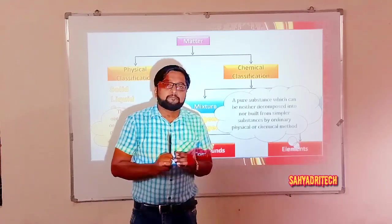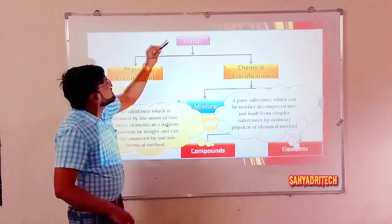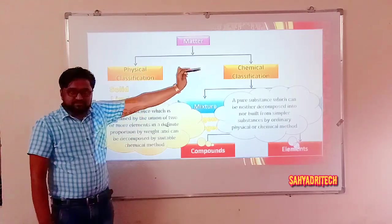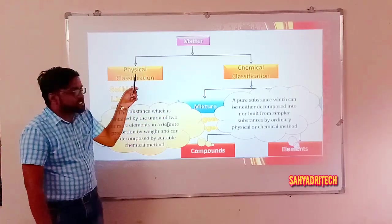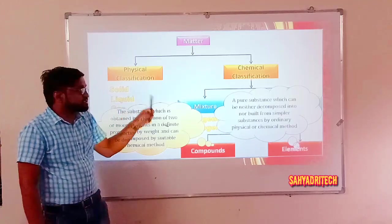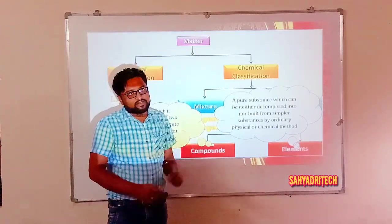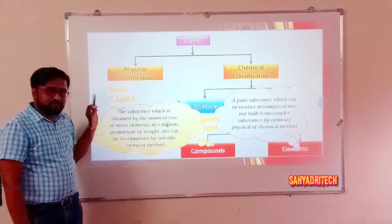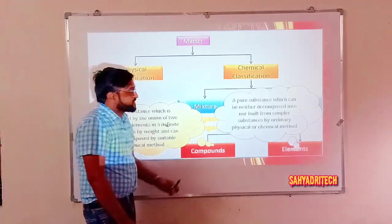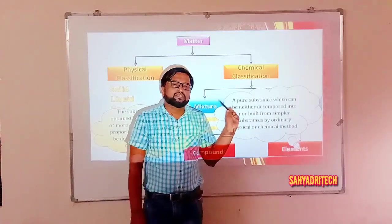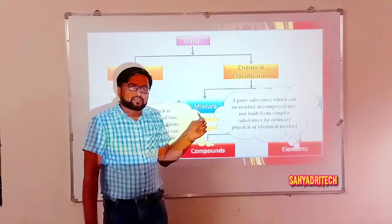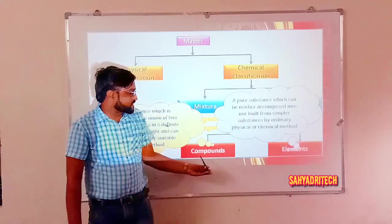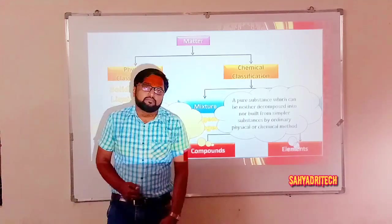Overall, if we consider the classification of matter based on two criteria: based on physical properties — physical classification — we get three types: solid, liquid, and gas. Based on chemical properties — chemical classification — we get mixtures and pure substances. In mixtures we have homogeneous and heterogeneous; in pure substances we have compounds and elements.